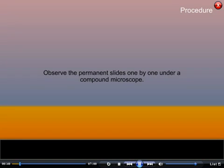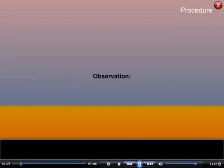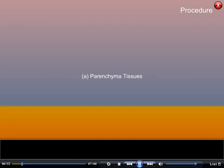Procedure: Observe the permanent slides one by one under a compound microscope. Observation 1 — Plant tissues. A. Parenchyma tissues.